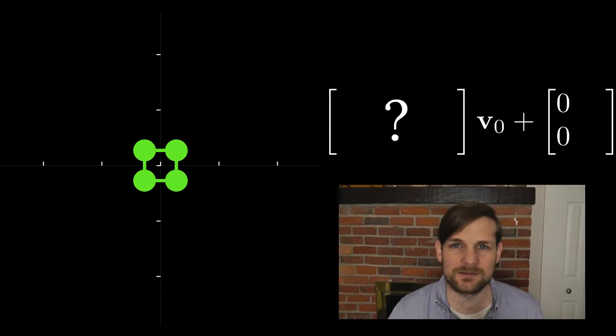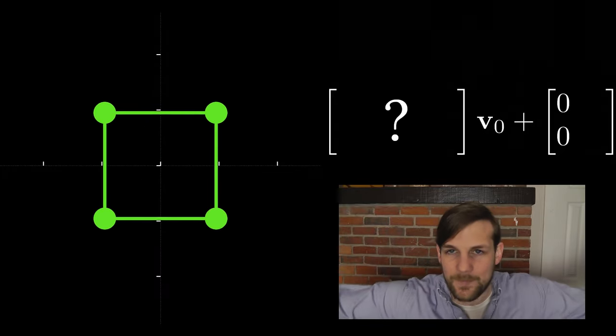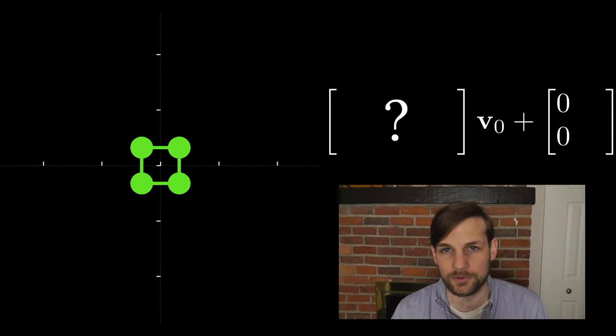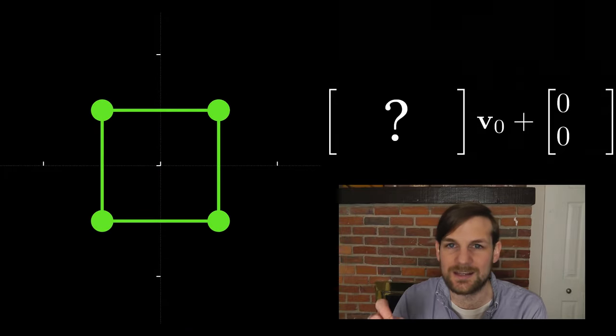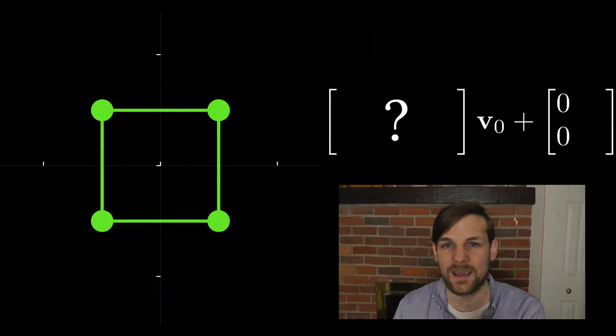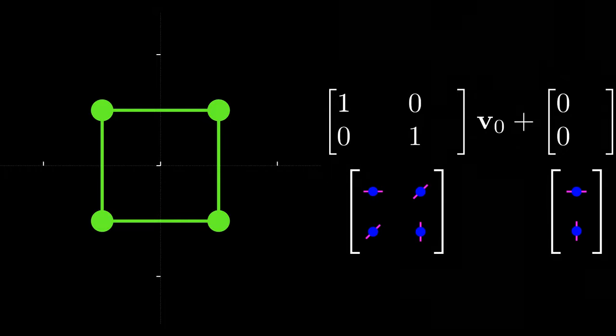For now though, it kind of feels like all of these transformations just magically fall out of the matrix multiplication, which is not particularly intuitive. For that reason I usually see each individual element in the matrix as some sort of dial that we can manipulate.